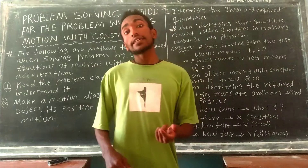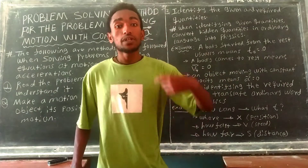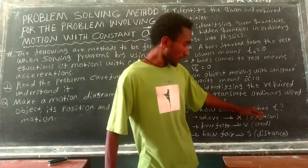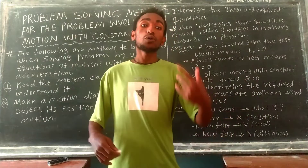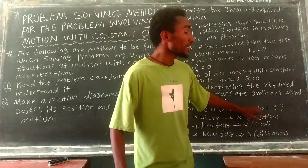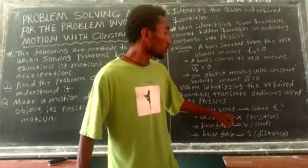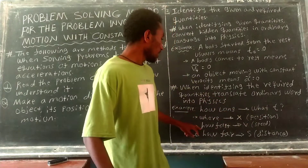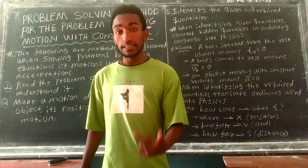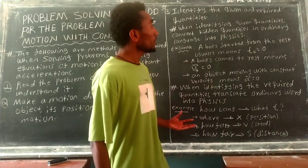The required quantities also translate ordinary words into physics. For example, 'how long does it take to reach a point?' means time. 'How fast is it?' means speed. 'How far is it?' means distance. You should identify whether a word represents a given or required quantity.